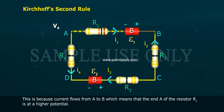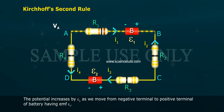which means that the end A of the resistor R1 is at a higher potential. The potential increases by Epsilon 1 as we move from negative terminal to positive terminal of battery having EMF Epsilon 1.